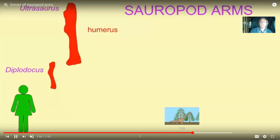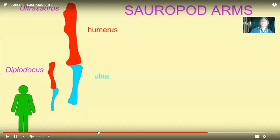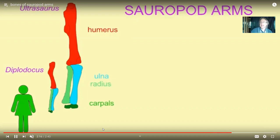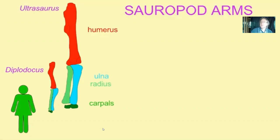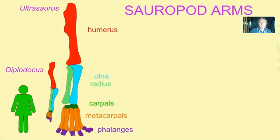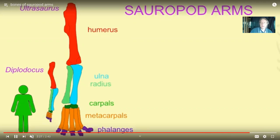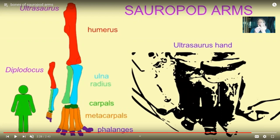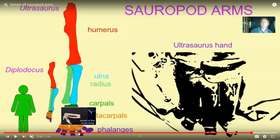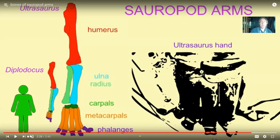Whether you look at Diplodocus or the enormous Ultrasaurus, you see the same bones: humerus, radius and ulna in the forearm, then carpal bones, metacarpals, and phalanges. Sauropods reduced some of these smaller bones — thin bones would be more brittle when supporting the animal's entire weight. The number of phalanges is smaller and they're stout. A sauropod's arm could be three times the height of a human. Most dinosaurs had arms shorter than their legs, and even four-footed ones like stegosaurus or triceratops held their heads low because of this.